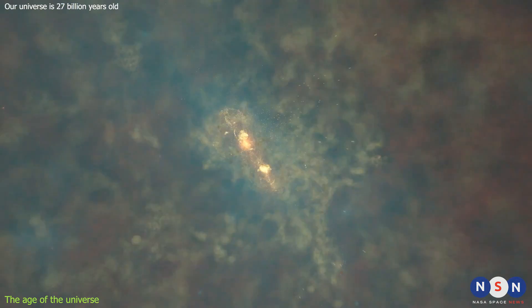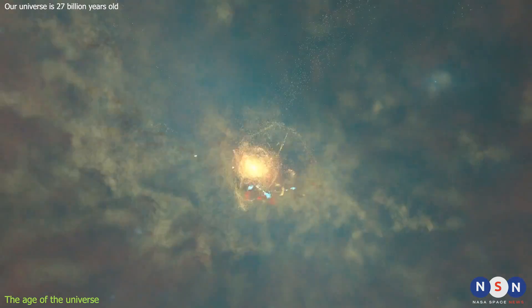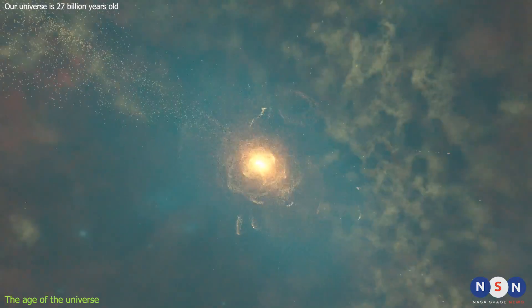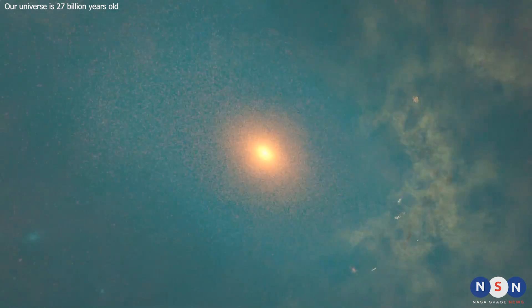How did these galaxies become so small, dense, and active in such a short time? And how did they survive the harsh conditions of the early universe, such as the intense radiation and the frequent collisions with other galaxies?